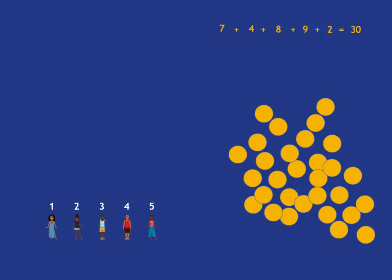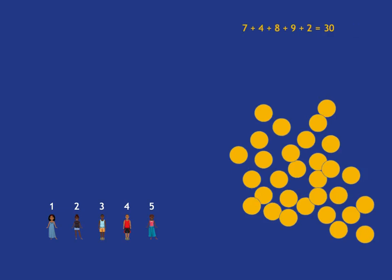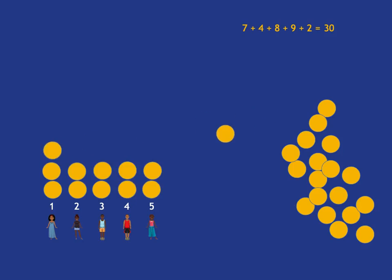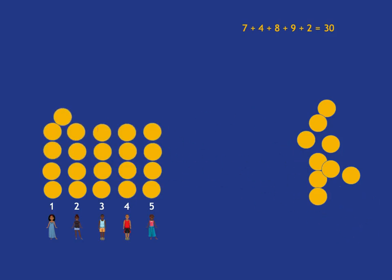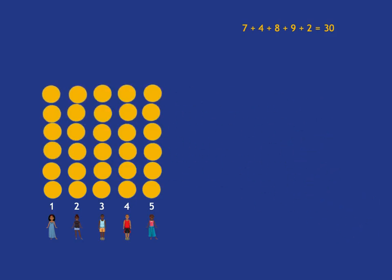And then what we do is we redistribute the coins fairly. And so what we're doing is we're taking those 30 coins and we're dividing them between the five people fairly. And so what each person will then get is six. And that is what the mean is.